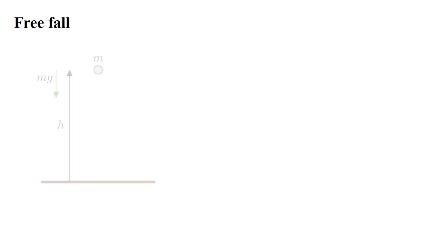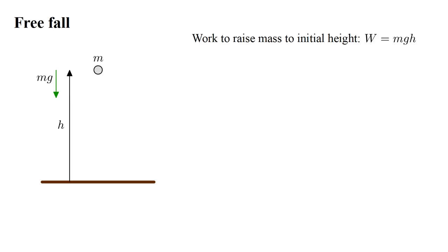Let's use the work concept to analyze the free-fall experiment. To set up the experiment, we raise a mass m to a height h above the ground. This requires work mgh. Then we let the mass fall. In video one, we saw that after a time t, the distance fallen is x equals one-half g t squared.